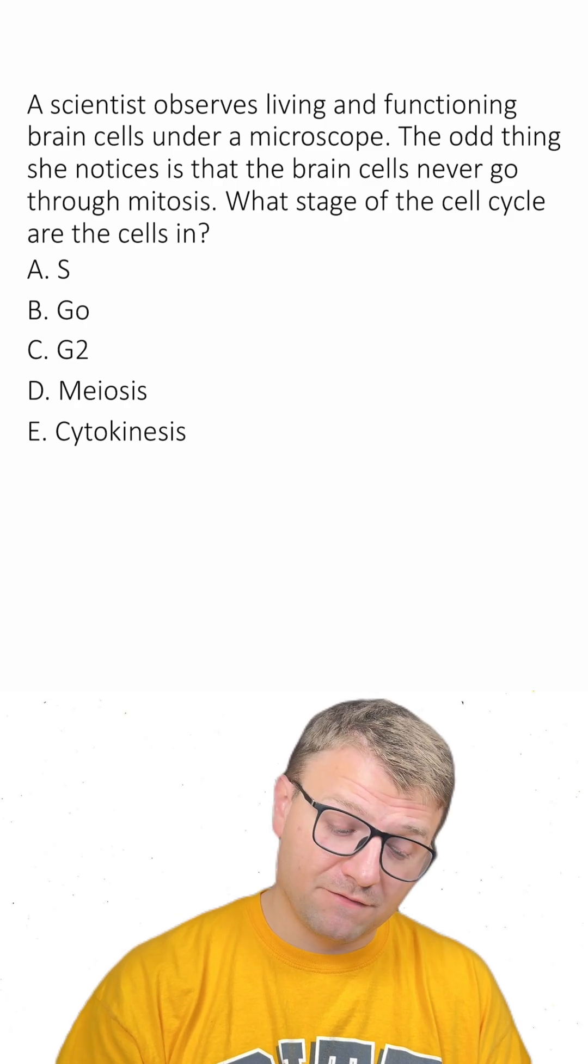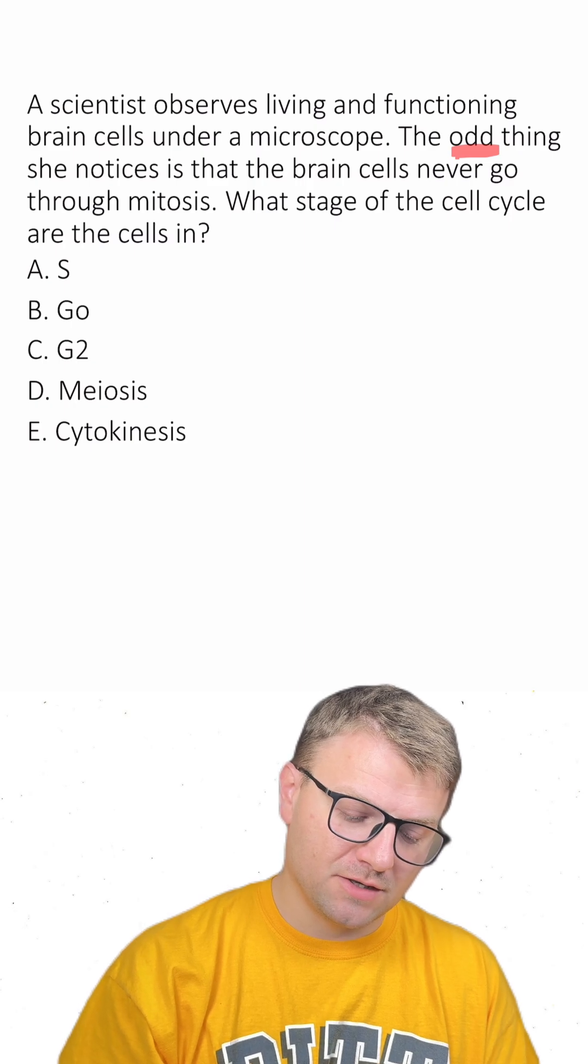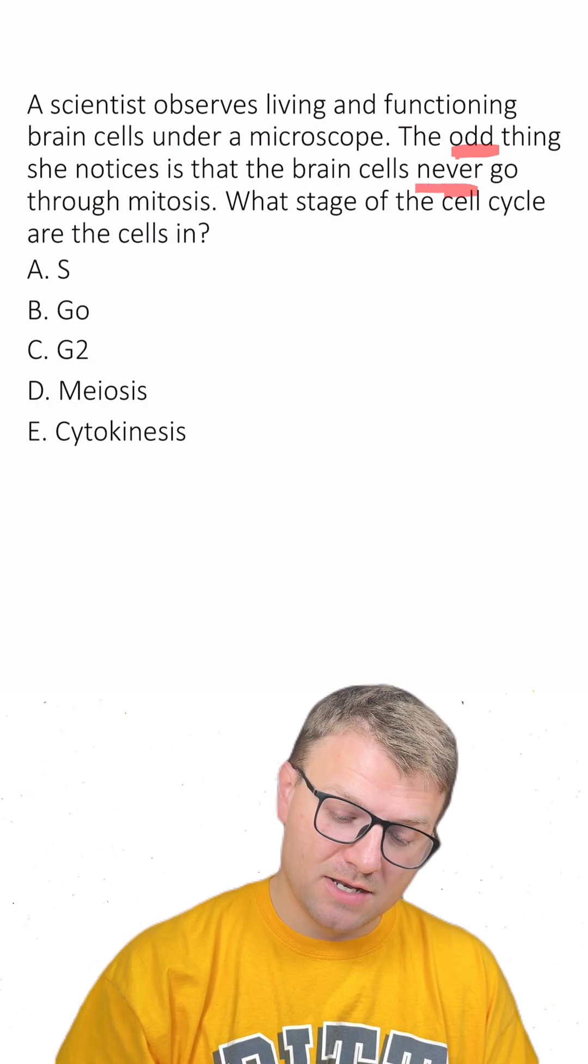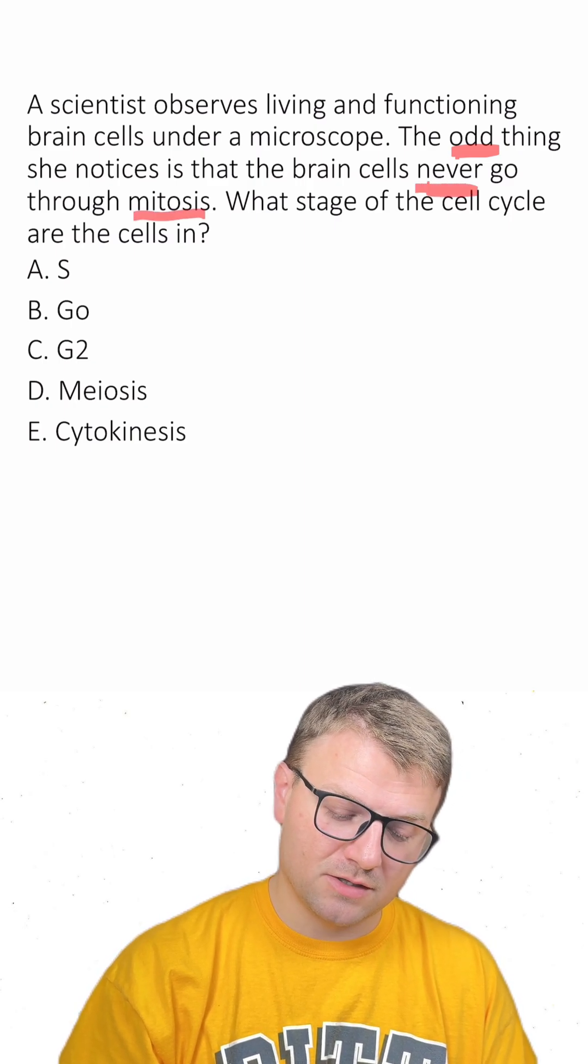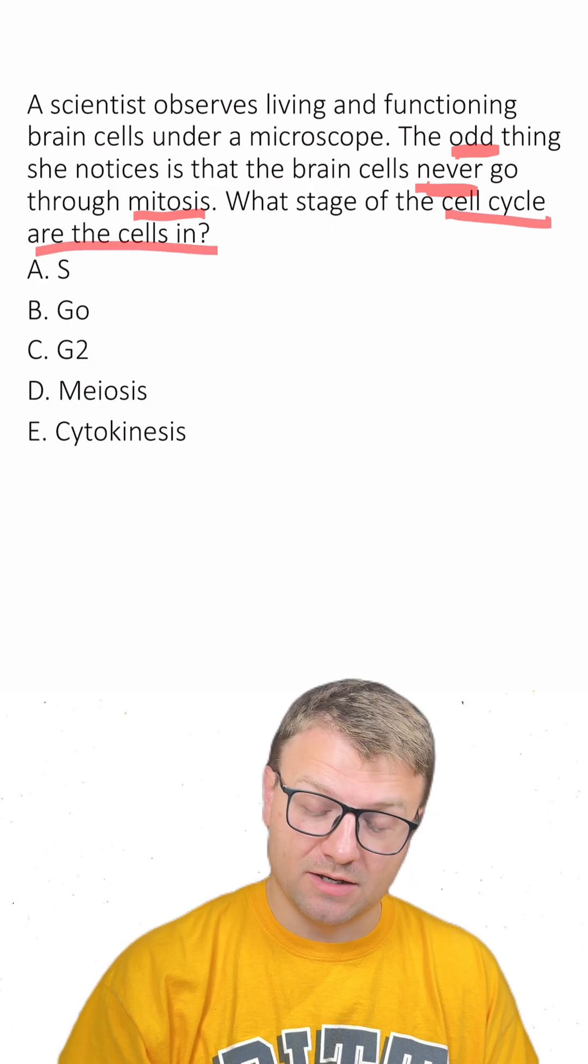A scientist observes living and functioning brain cells under a microscope. The odd thing she notices is that the brain cells never go through mitosis. What stage of the cell cycle are the cells in?